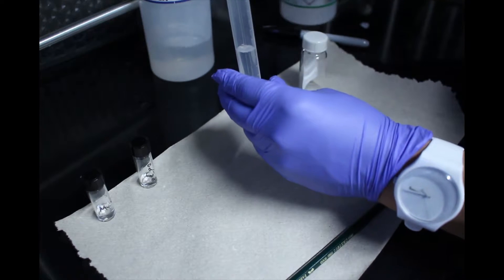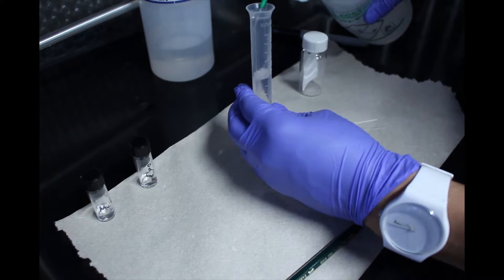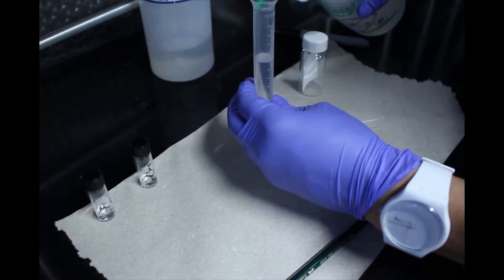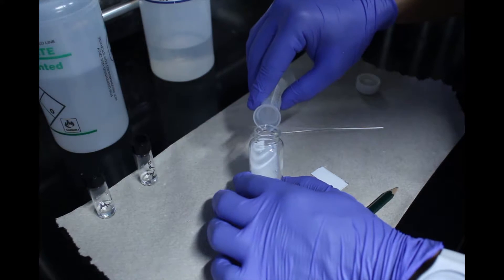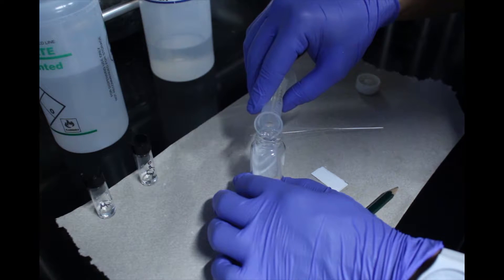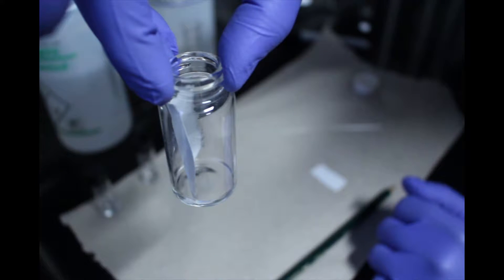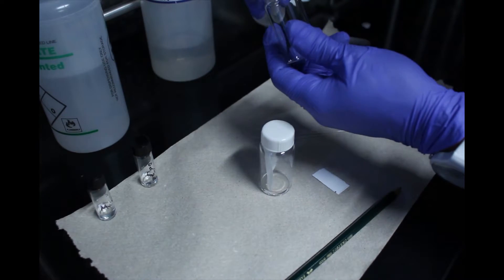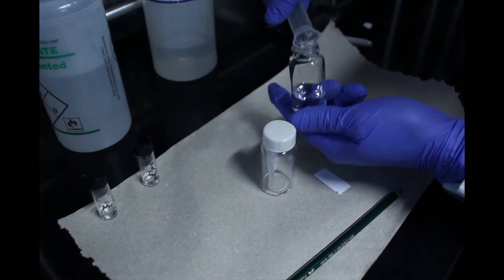To determine an appropriate solvent system, begin with a 50% ethyl acetate and hexanes mixture. Add enough of the prepared solvent system to cover the bottom of your TLC chamber equipped with a piece of filter paper. Store any extra solvent system in a sealed and labeled vial.